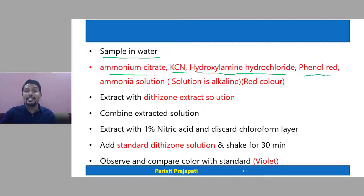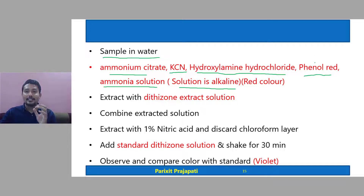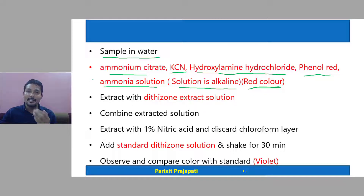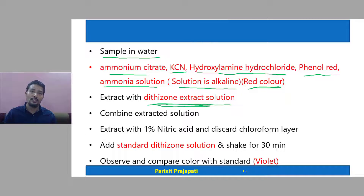Then ammonium citrate, potassium cyanide, hydroxylamine hydrochloride, and phenol red indicator are added. Lastly, ammonia solution is added, which makes the solution alkaline. With phenol red as indicator, this produces a red color. The sample with all these reagents is then extracted with dithizone extract solution.